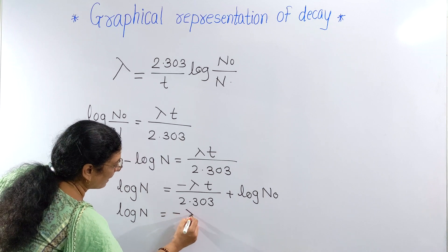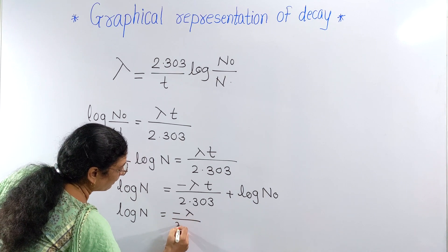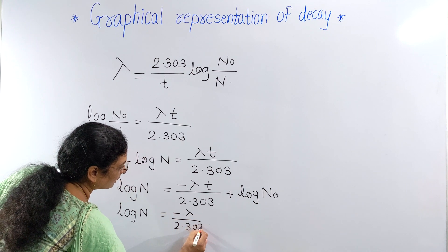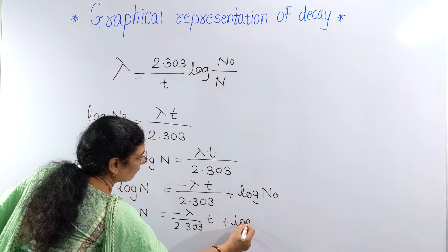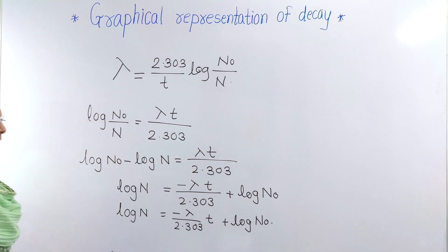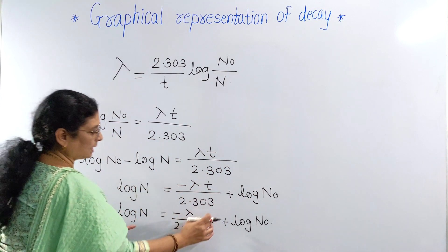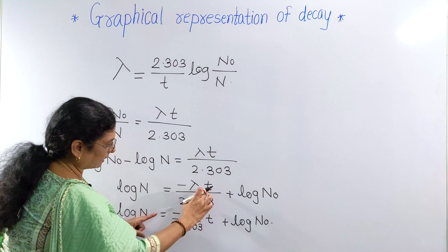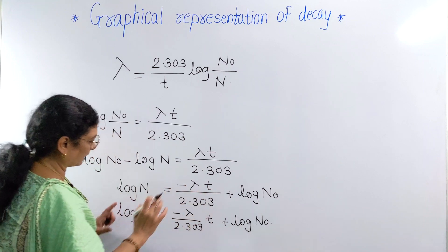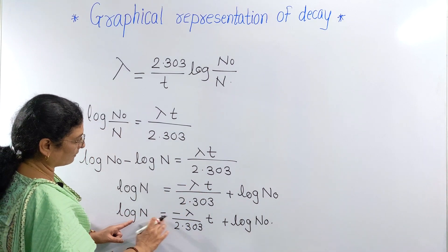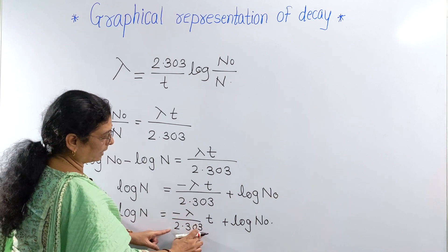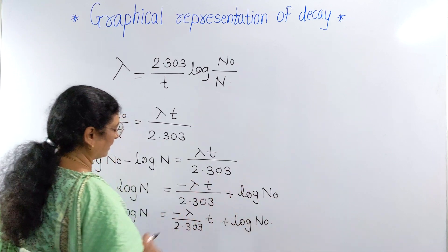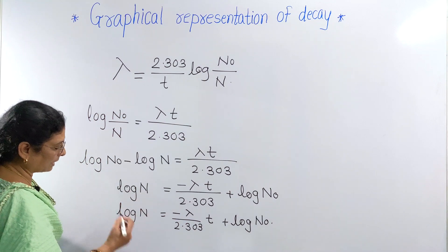We can write this equation as: log of N equals minus lambda upon 2.303 times t, plus log of N₀. This is the equation of a straight line of the form y equals mx plus c.